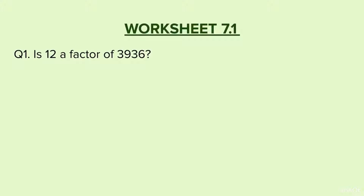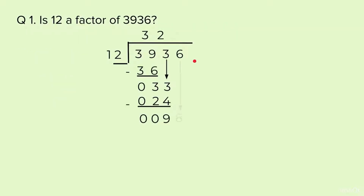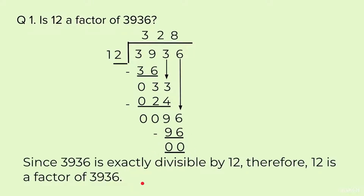Question 1: Is 12 a factor of 3936? We will divide 3936 by 12. If we get the remainder as 0, that means it is a factor. When we divide by 12, we are getting 0 remainder. Since 3936 is exactly divisible by 12, therefore 12 is a factor of 3936.